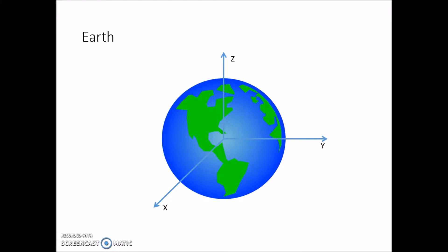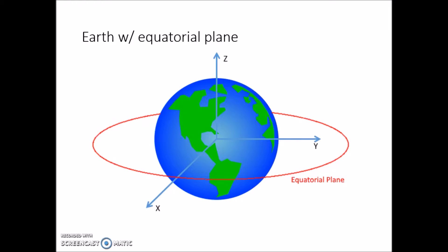Across the equatorial body, you have an equatorial plane. This is exactly as it sounds. It's a plane that goes around a body, in this case Earth, around the equatorial plane.